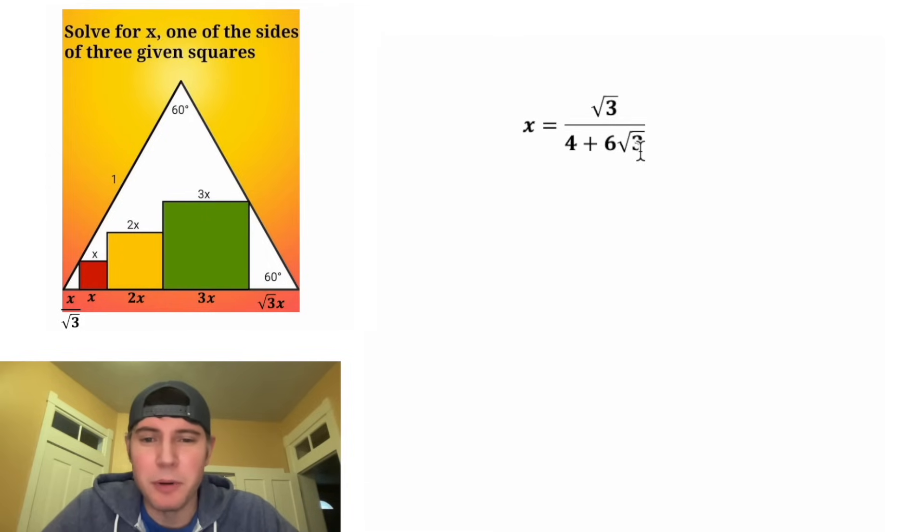We have solved for X. But I want to rationalize the denominator. We can multiply top and bottom by the conjugate. On top, the root 3 goes to both of these terms. It's going to give us 4 root 3 minus. And then we can bring down the 6. And root 3 times root 3 is equal to 3. And then 6 times 3 is 18. And then on bottom, 4 times 4 is 16.